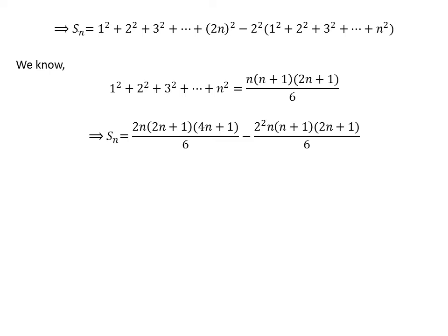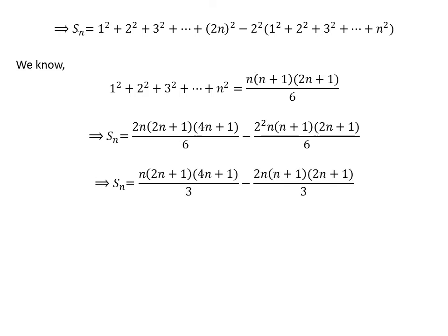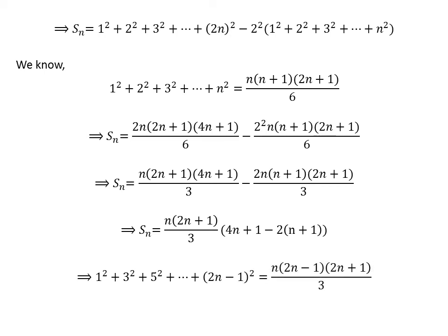Cancelling out the common factor 2 in the numerator and denominator in both fractions, we get Sn is equal to n times (2n plus 1) times (4n plus 1) upon 3, minus 2 times n times (n plus 1) times (2n plus 1) upon 3. Since n times (2n plus 1) upon 3 is the common factor, taking it out we get Sn is equal to n times (2n plus 1) upon 3 times the quantity (4n plus 1) minus 2 times (n plus 1), which simplifies to n times (2n plus 1) times (2n minus 1) upon 3.